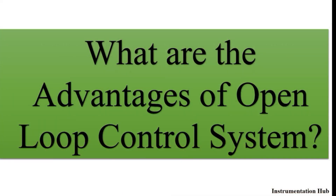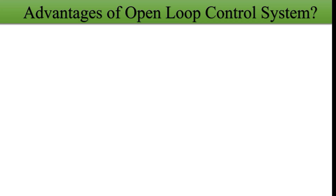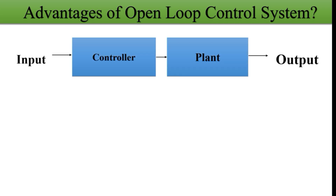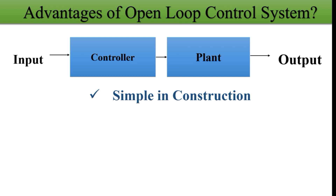The next question: what are the advantages of open loop control systems? When answering, first introduce what an open loop control system is: a system in which the control action depends on the input signal and is totally independent of the output signal — feedback and error detector are not present. Now the advantages: it is really simple in construction, as it does not have any feedback or error detector, so it is simply designed using a controller and some input/output devices. It is easy to design and has low maintenance.